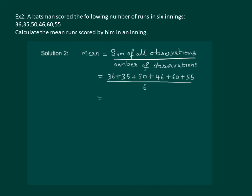Let us solve this further. On adding, we get 282 whole divide by 6 which is equal to 47. And finally, we can write that the mean runs scored in an inning are 47.